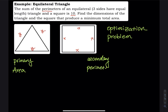The perimeter of the two figures is 4x plus 3y, since x + x + x + x = 4x for the square and 3y for the equilateral triangle. The sum equals 10, so 4x + 3y = 10. That is our secondary equation.